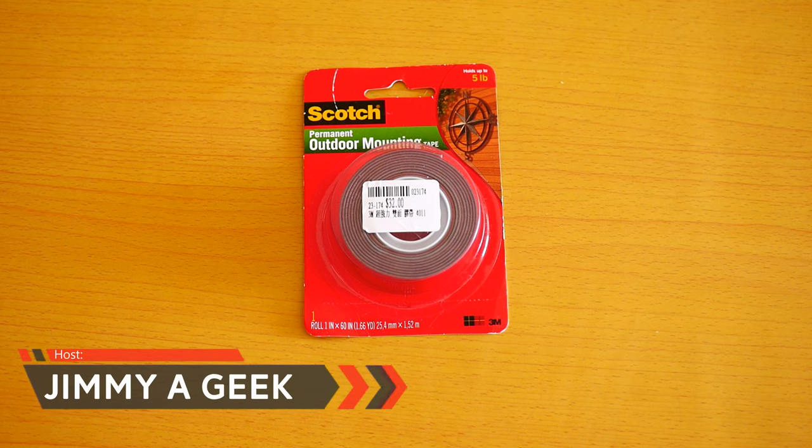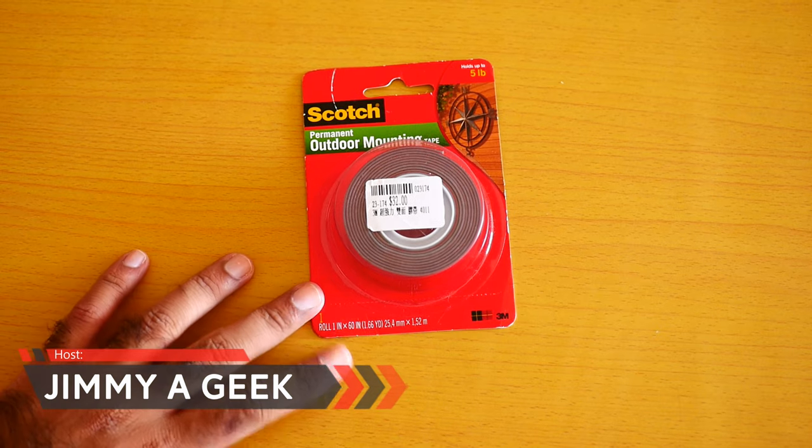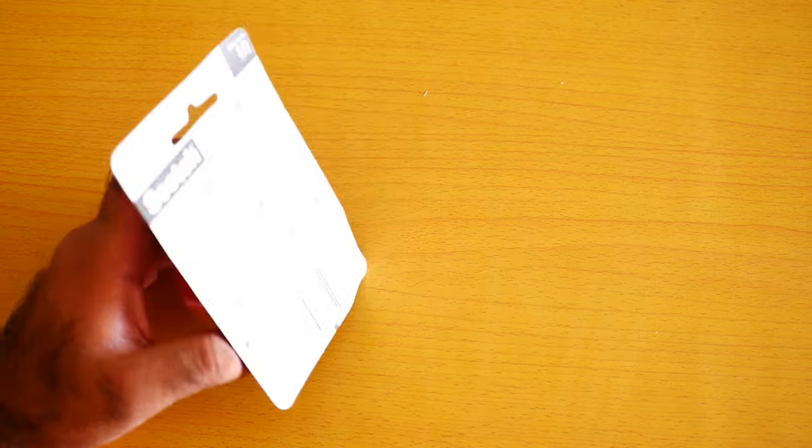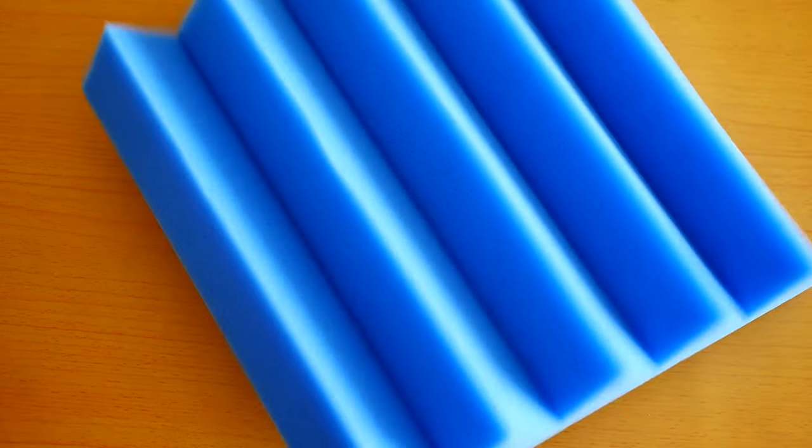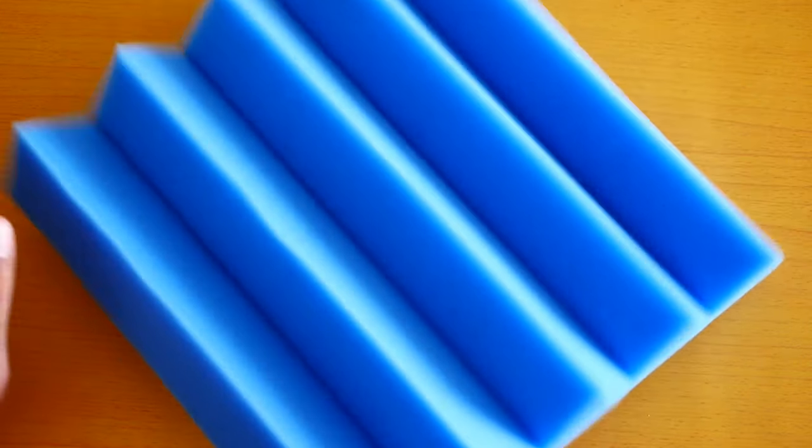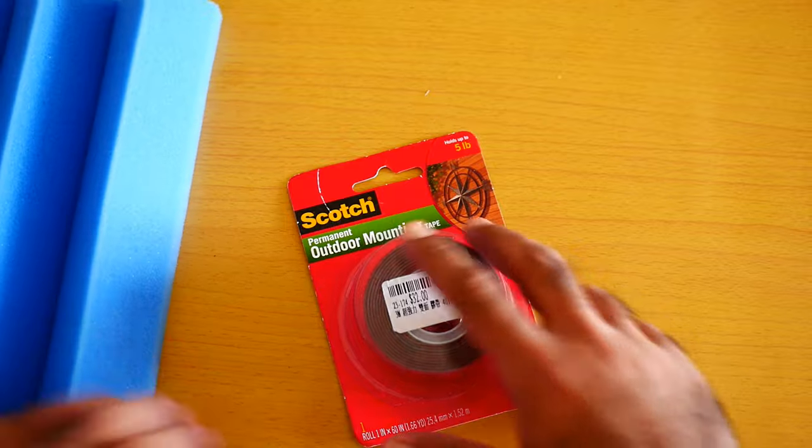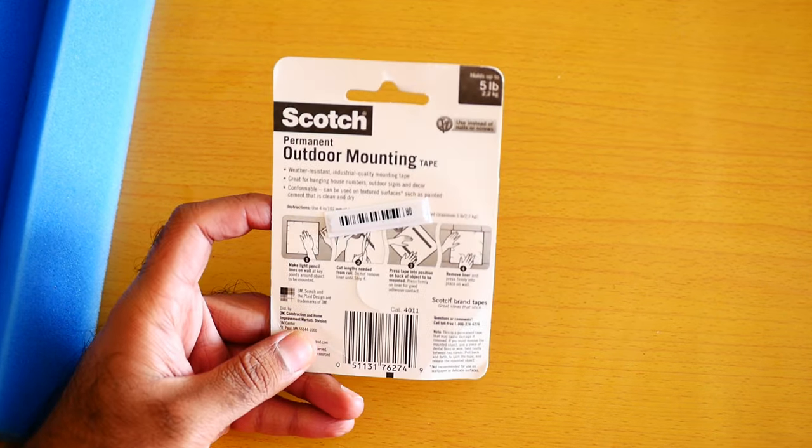What's up guys, it's me Jimmy Eric. So here is the amazing Scotch permanent outdoor mounting tape. Why I bought this tape? I bought it to mount my acoustic soundproofing foam on the wall. If you want to use it for the soundproofing foam, buy this tape. Let me show you from the back. As you can see from the back by yourself.